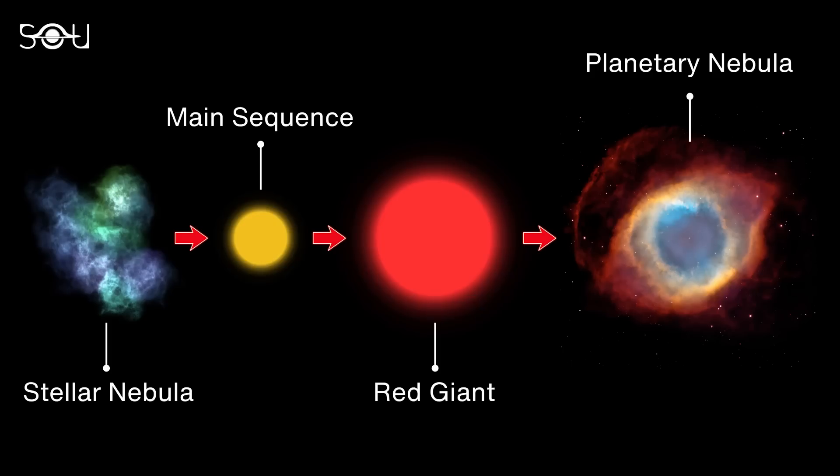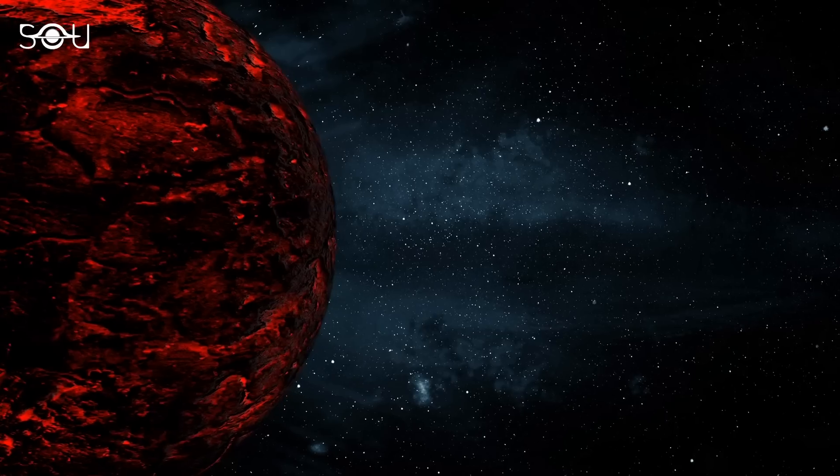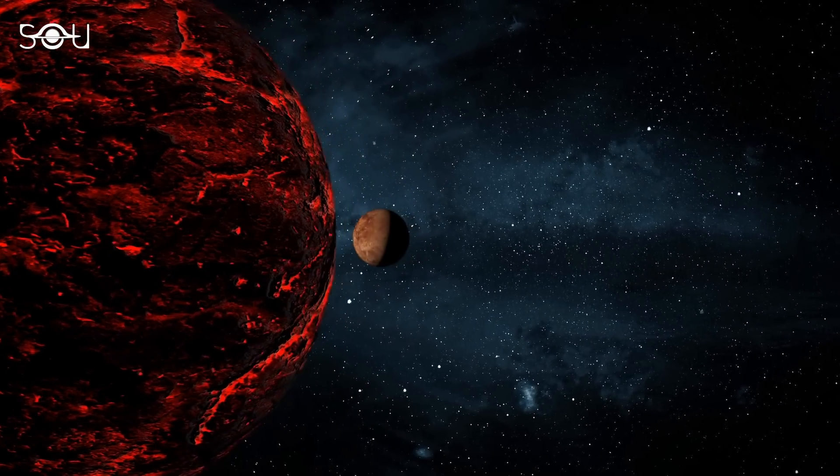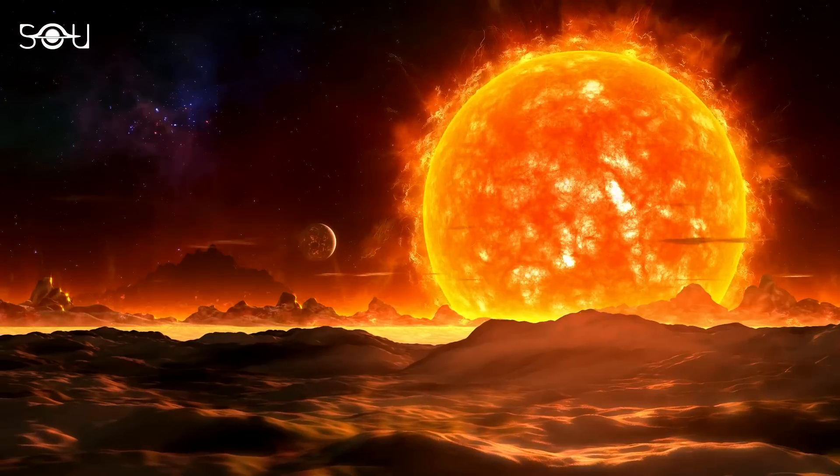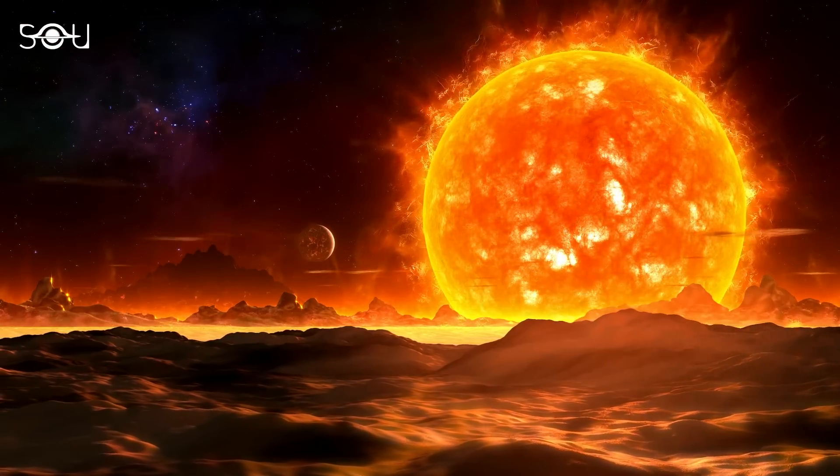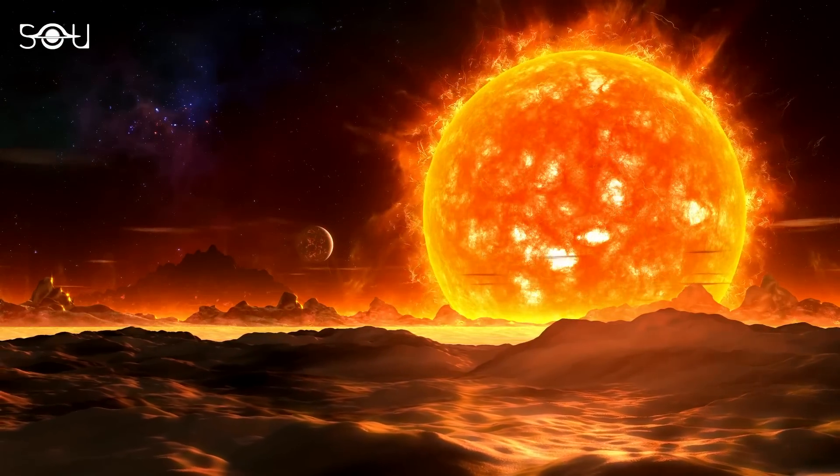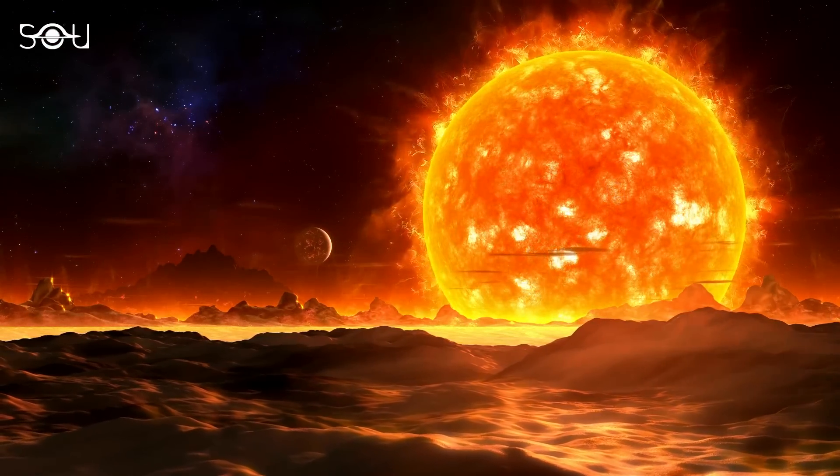Stars with a mass ranging from 0.3 to 8 times that of our Sun follow this evolutionary path, including our own Sun. Predictive models of stellar evolution suggest that as the Sun transitions into its red giant phase, its expansion could potentially reach the orbit of Mars, leading to the engulfment of Mercury, Venus, and Earth.